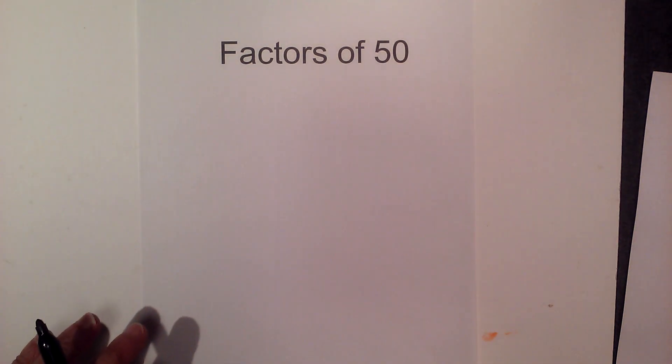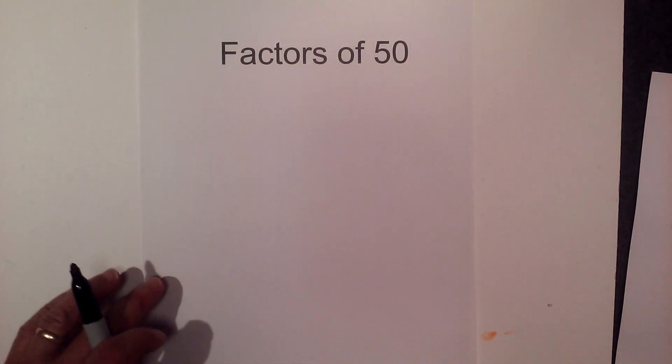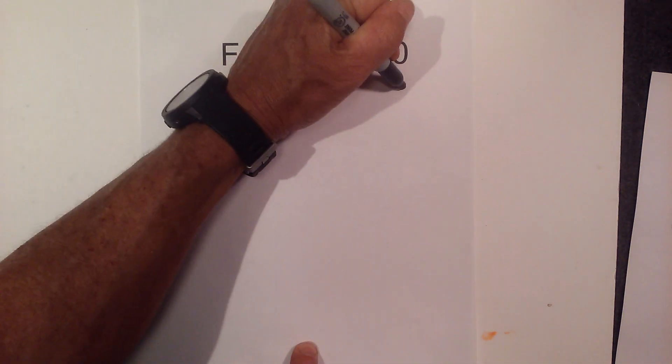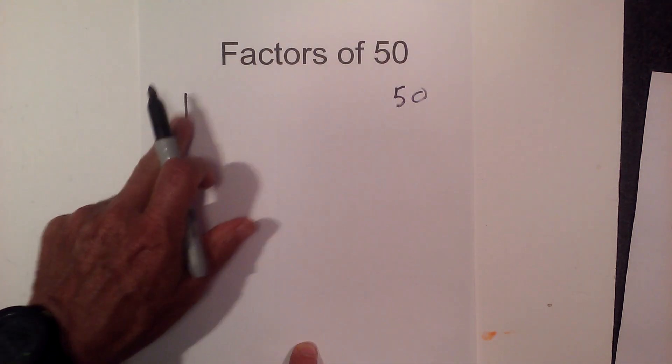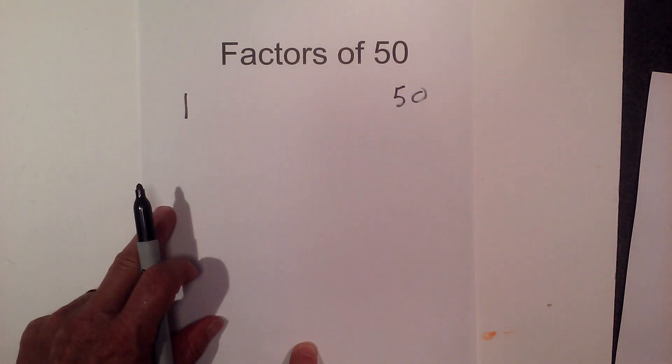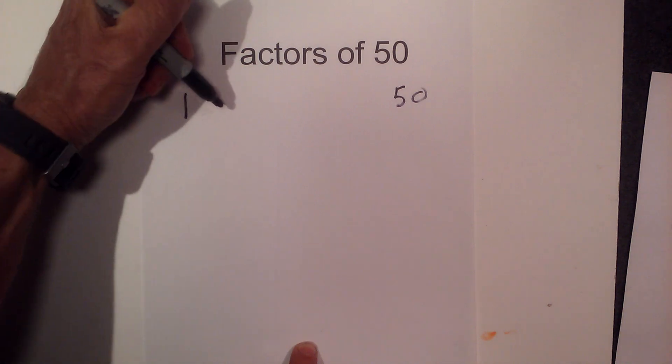In this video let's find the factors, the prime factorization, and the multiples of 50. So let's start, here is how I like to find the factors. I know 1 times 50 equals 50, and find all the numbers in between that multiply together that equal 50.